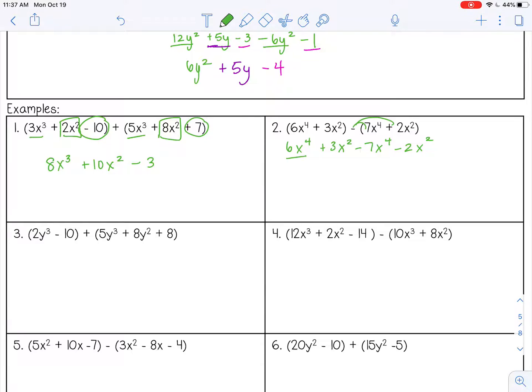So I have 6x to the 4th minus 7x to the 4th. So 6 minus 7, that's negative 1x to the 4th. You don't have to write the negative 1. It's understood to be there, so you can just write negative x to the 4th.